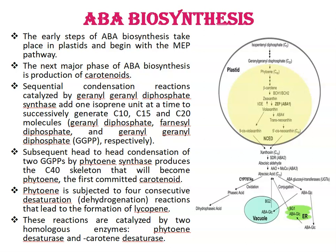Biosynthesis of Abscisic Acid. The early steps of ABA biosynthesis take place in plastids and begin with the MEP pathway — methyl-erythritol pathway. The next major phase of ABA biosynthesis is the production of carotenoids. Various condensation reactions catalyzed by geranylgeranyl diphosphate synthase enzyme add one isoprene unit at a time to successively generate C10, C15, and C20 molecules.